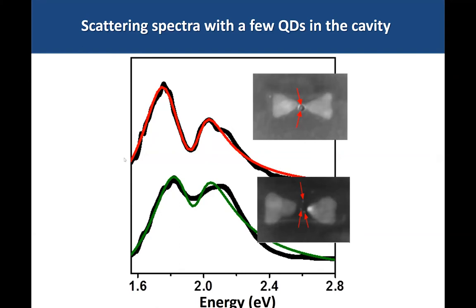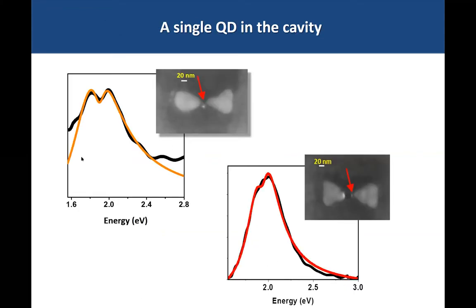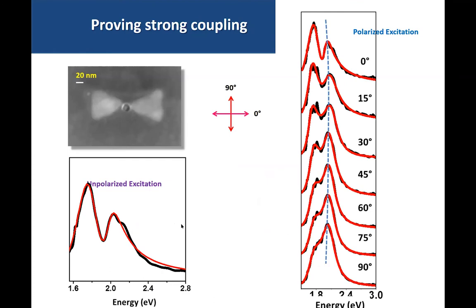Using dark-field microspectroscopy, we scatter broadband light from individual bowties with quantum dots inside. We see split spectra — vacuum Rabi splitting — indicating that we are at or close to the strong coupling regime. In the upper case we have two particles and in the lower case three, and in both cases we see a significant splitting. With a single particle, the coupling is not as strong — it goes with the square root of the number of particles — but we can still see a splitting, or at least a broadening of the spectrum compared to the empty cavity.